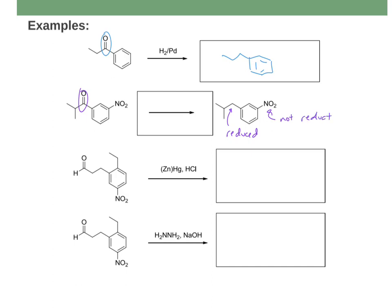For the Wolff-Kishner, I use H2NNH2 and NaOH. If I had done catalytic hydrogenation or the Clemmensen, it would have also reduced the nitro group. For the third example, we have the Clemmensen reduction — zinc mercury amalgam with hydrochloric acid. That reduces nitro groups and any benzylic carbonyls. I don't have any benzylic carbonyls here, just an aldehyde out there that's not benzylic, so it's left alone. I reduce the nitro to NH2, giving an aniline, while the non-benzylic carbonyl remains unaffected.